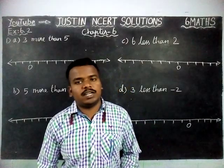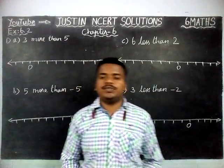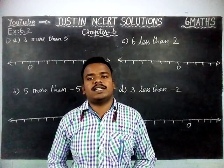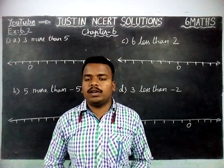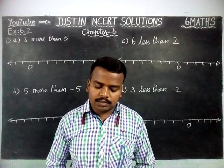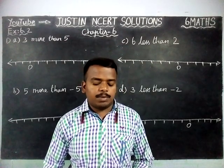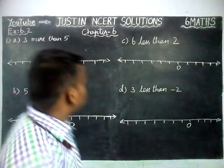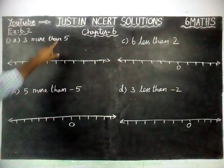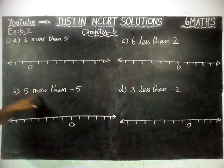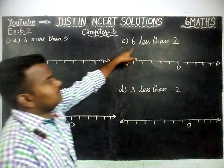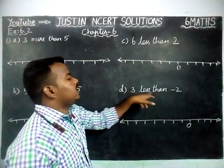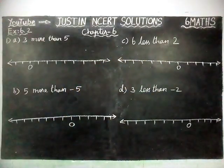Hi students, welcome to Justine's NCIT Solutions. In this video we are going to see Class 6 Maths Chapter 6 Exercise 6.2 First question. The question is: using the number line, write the integer which is — (a) 3 more than 5, (b) 5 more than minus 5, (c) 6 less than 2, (d) 3 less than minus 2.